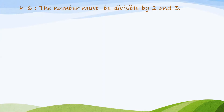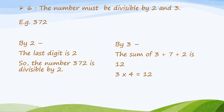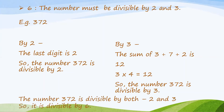The Divisibility Rule of 6 says that the number must be divisible by both 2 and 3. For example, the number 372: first, we check its divisibility by 2 — the last digit is 2, so 372 is divisible by 2. Now we check divisibility by 3 — the sum of 3 plus 7 plus 2 is 12, and 3 times 4 is 12, so 372 is divisible by 3. Since 372 is divisible by both 2 and 3, it is divisible by 6.